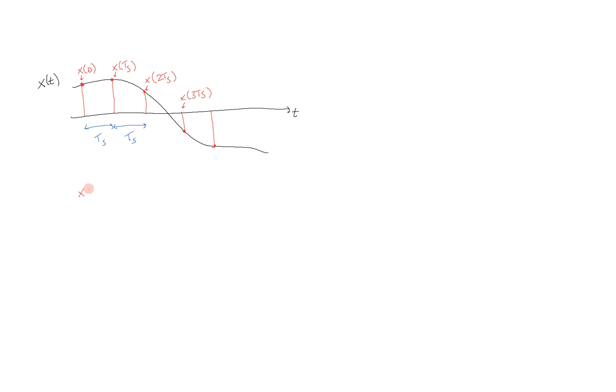Therefore, we can write x of n t sub s, that is our function for the sampled signal right here. And that's going to be equal to, we define this as x of n in brackets, where n is going to be an integer. This is the notation for a discrete sampled signal, where n is an integer, it's just going to be 0 or 1 or 2 or whatever the multiplier on t sub s is to obtain the value that we desire.